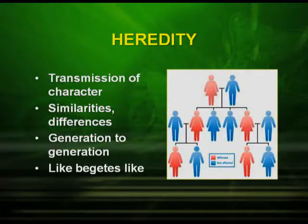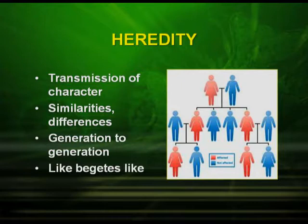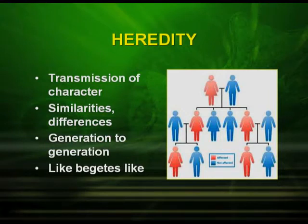Before we go into the details of Mendel's experiment, let us look at some important terms used in genetics. The first important term is heredity. What is heredity? It is the transmission of characters — similarities and differences — from generation to generation. A very common proverb is 'like begets like,' meaning similar organisms give rise to similar types.